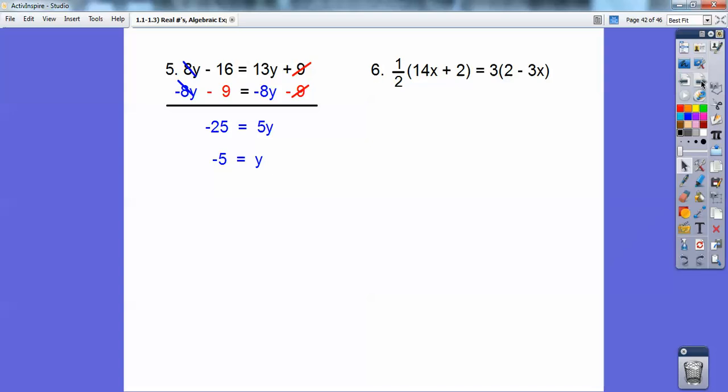This one here, looking at this, a half is like dividing by 2. And I can divide both those by 2. So I'm going to go ahead and distribute the half through. So a half of 14x is 7x and a half of 2 is 1. And then distribute the 3 through on that side right there. And then just like on number 5, I'm going to go ahead and add 9x and subtract 1 from both sides. 7x plus 9x is 16x. And then 6 minus 1 is 5. Divide by 16 on both sides. And you get 5/16.